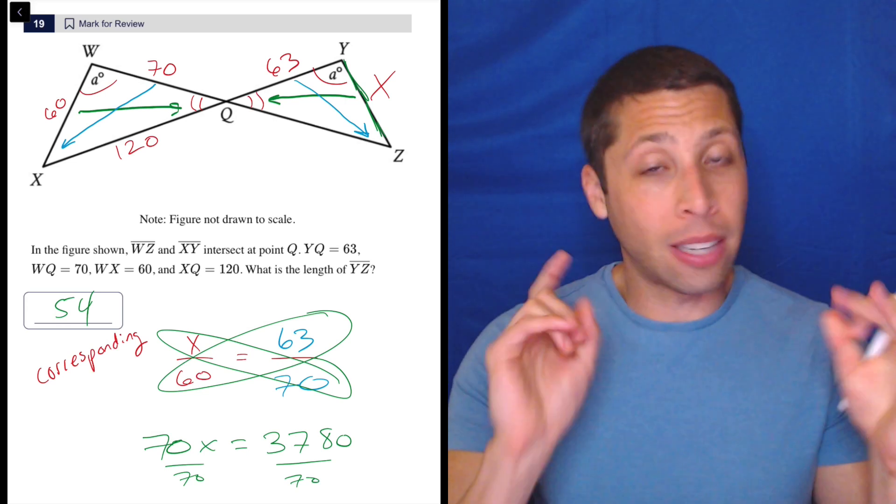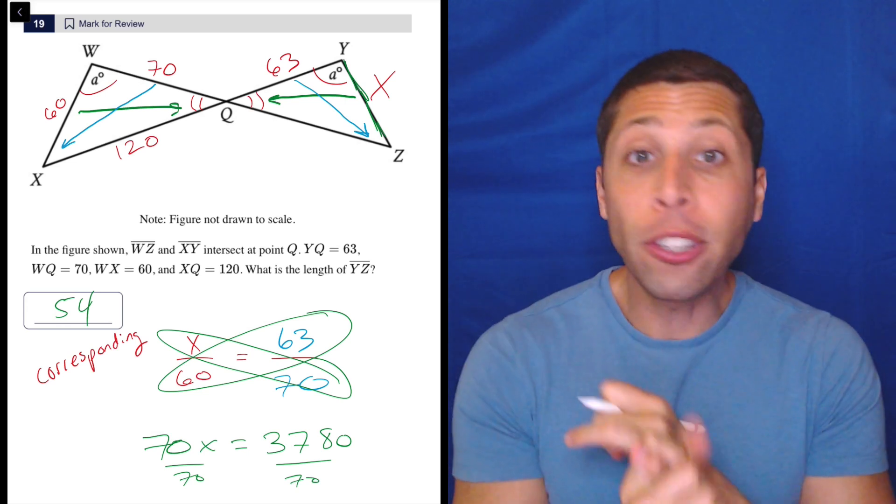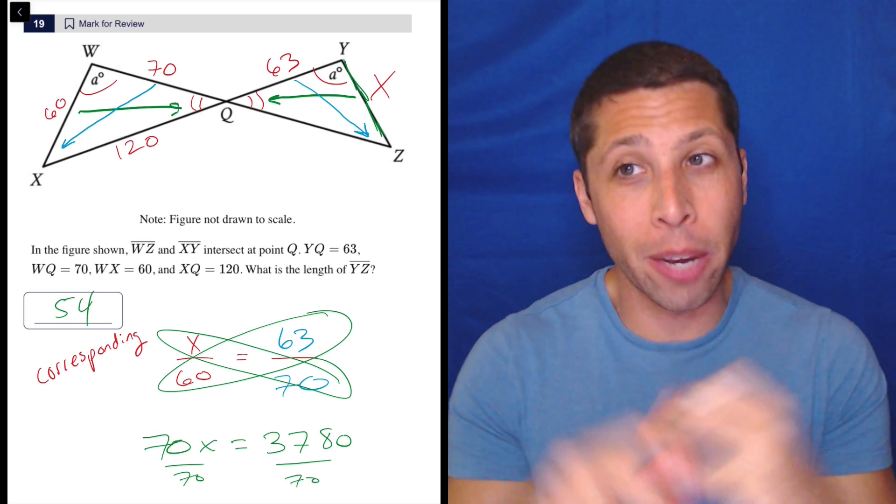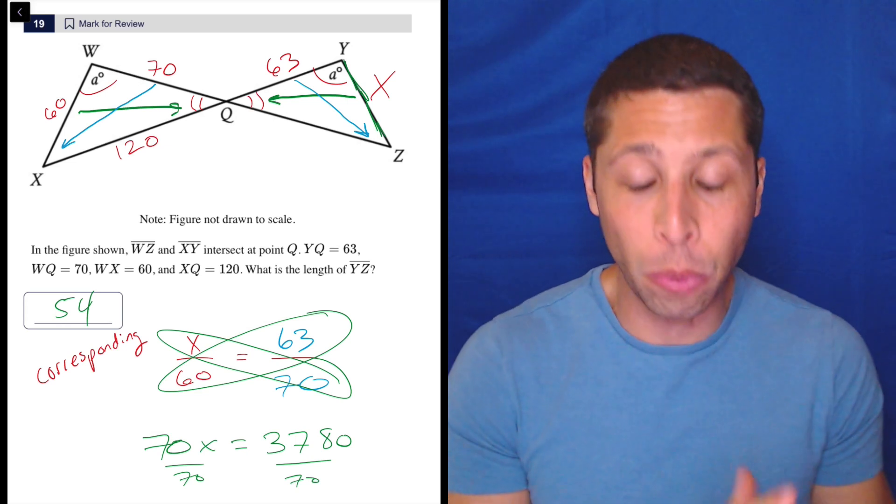But you know, just to reiterate, you have to look at this and instantly know it's about similar triangles. If you don't, then you haven't really studied geometry in a way where you kind of know what's on the list of possible rules.